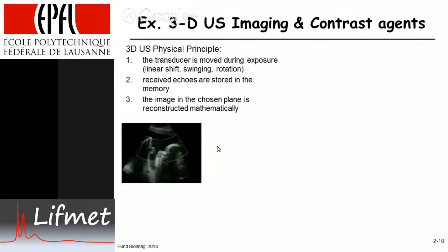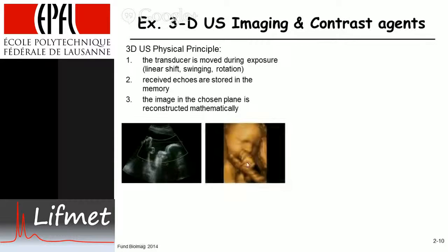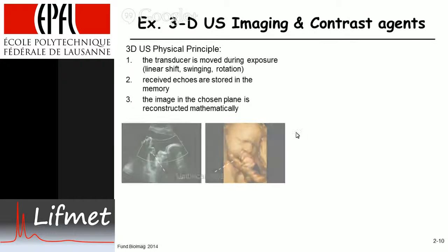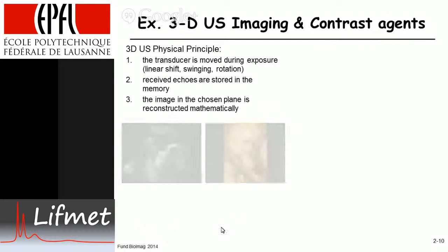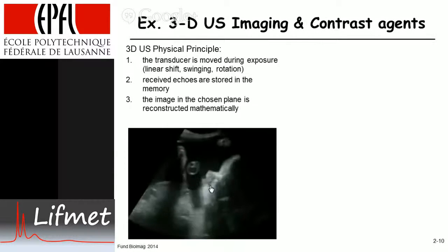This is what a 2D image looks like of a fetus. Here you can see the head, the nose, the hand, and the umbilical cord — you can see the three vessels that are in there. And this is the corresponding three-dimensional reconstruction: a very nice image of this unborn child. That's the umbilical cord here, shown as a cross-section.